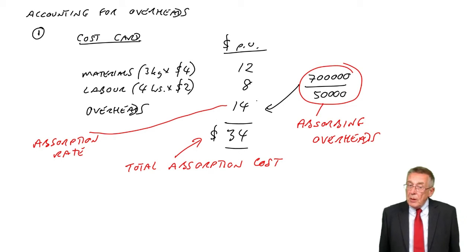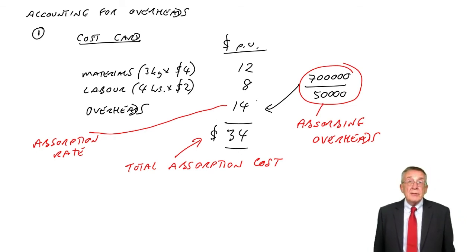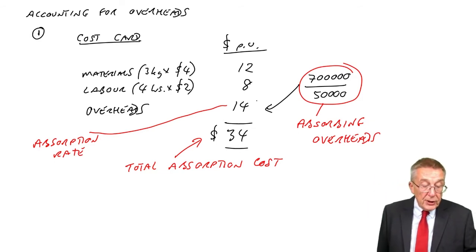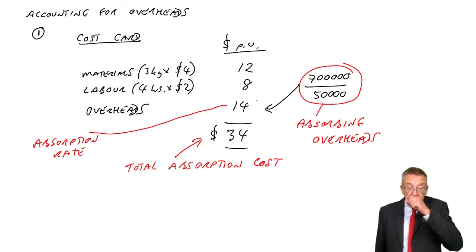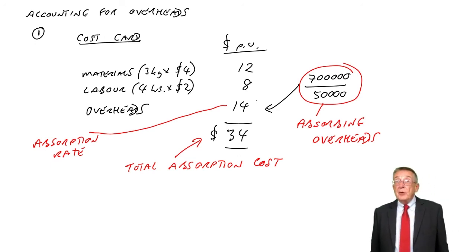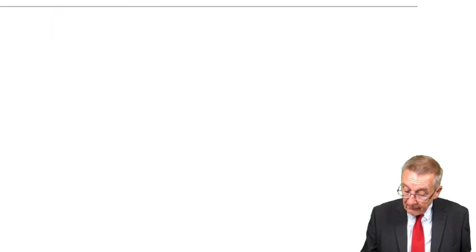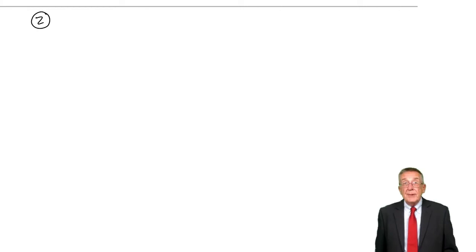There are two problems that can be involved, which give us slightly more work. And the first problem is where you produce more than one product in the same factory. So have a look at example two with me to explain what our problem is and how we deal with it.